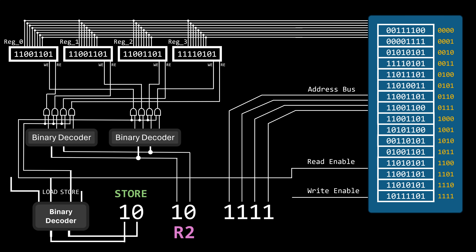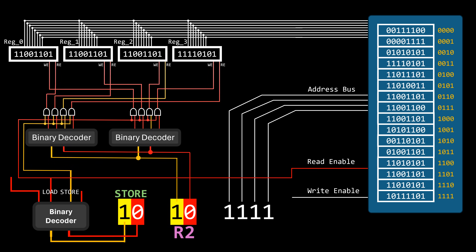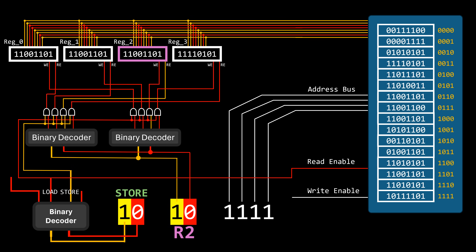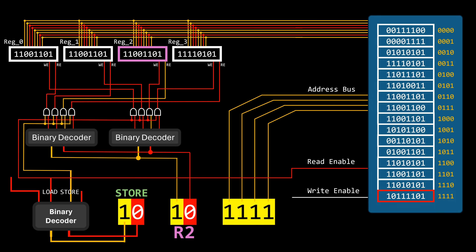Let's do the same but with the store instruction. This instruction copies the value from a register to a specific memory location. The decoders should activate only the read-enable signal of the register specified in the third and fourth bits — in this case, register 2. This makes the value of that register act as input on the memory data bus. The same wire that activated the memory read-enable signal in the previous load instruction is now deactivating it, which is precisely what we want. The last four bits indicate where to write the value, and by activating the memory write-enable signal, the value in register 2 is now copied to memory location 1111.